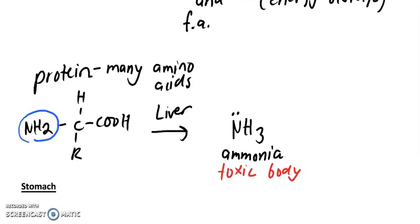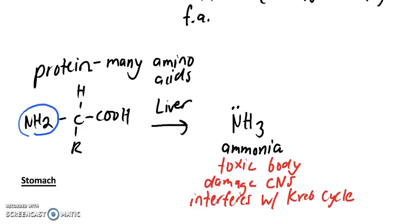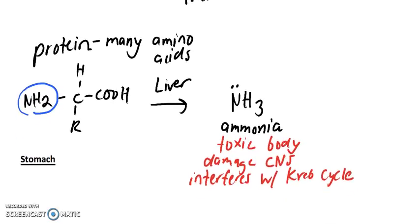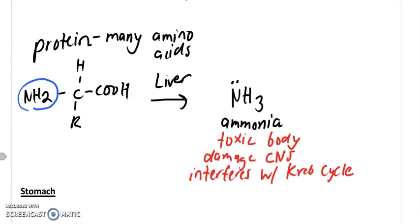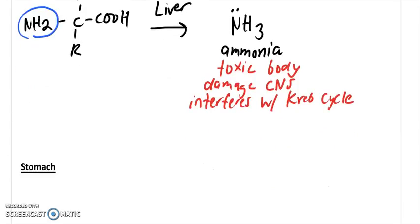But ammonia is toxic to your body. It can cause damage to your central nervous system, CNS. It also interferes with the Krebs cycle in the mitochondria. So no good. We have to clear this out of our body.